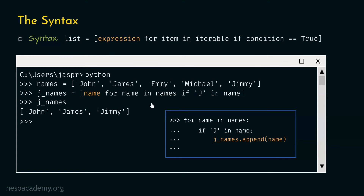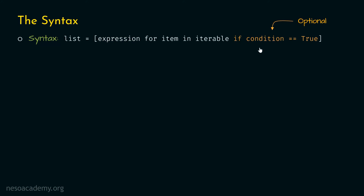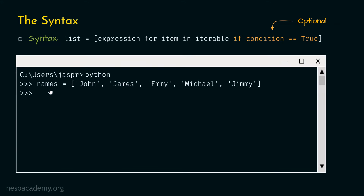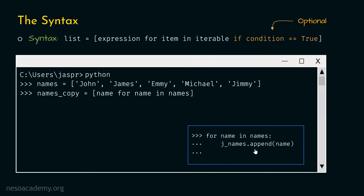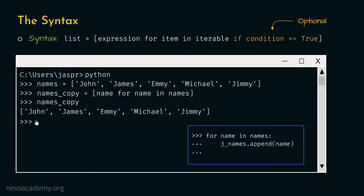One more point: the condition-checking part is optional — it is not mandatory. Let's look at an example where we don't need it. Consider the same names list with five items. This time we want to create a copy of this list, so we write: names_copy = [name for name in names]. Typing names_copy gives us the same list with five items — we have created a copy of the names list using list comprehension without any condition.